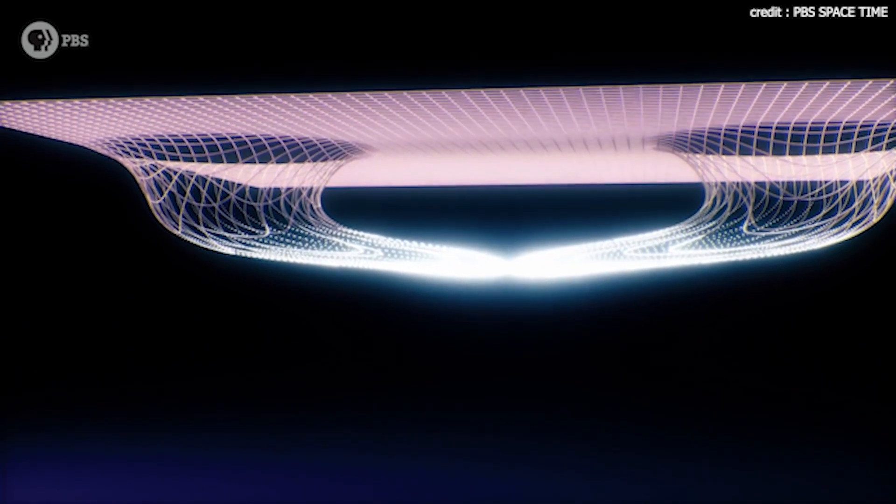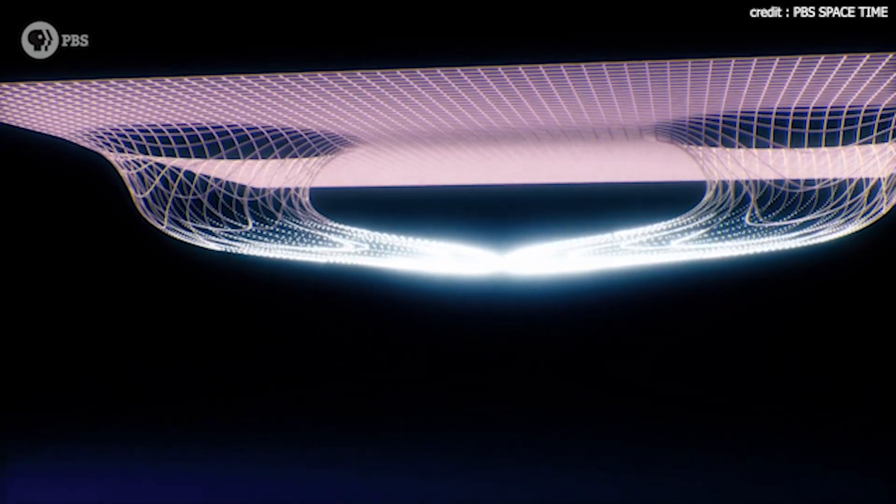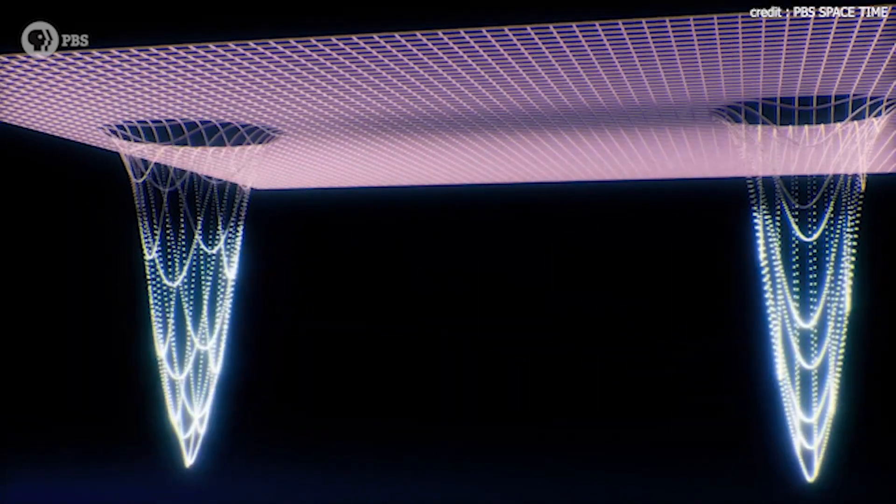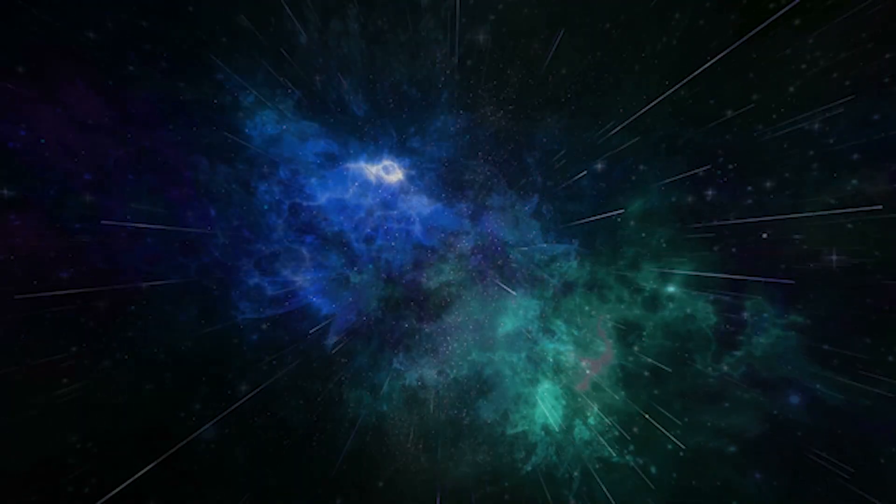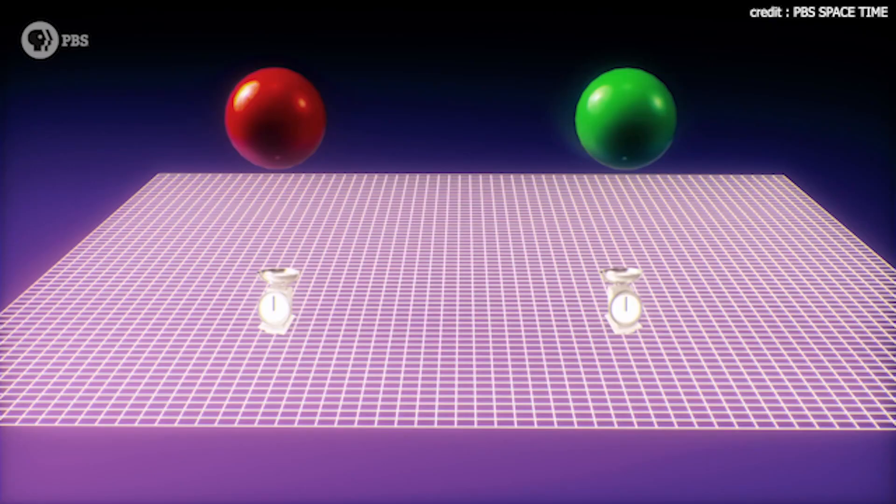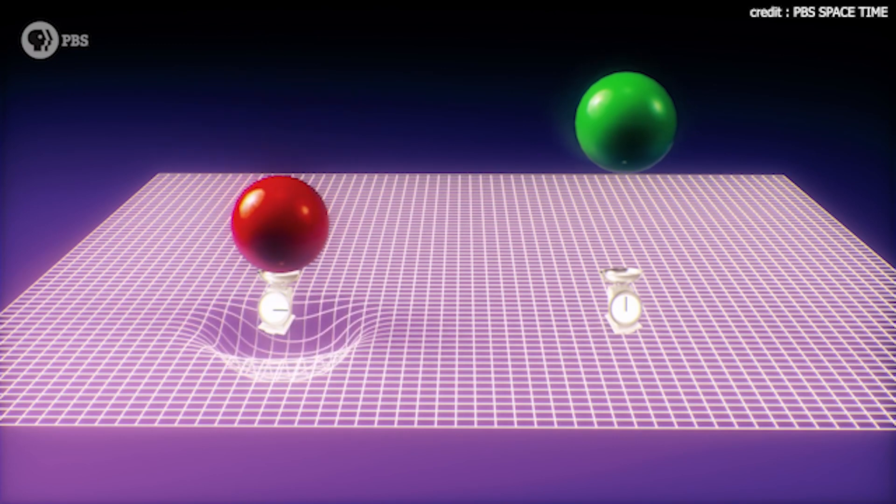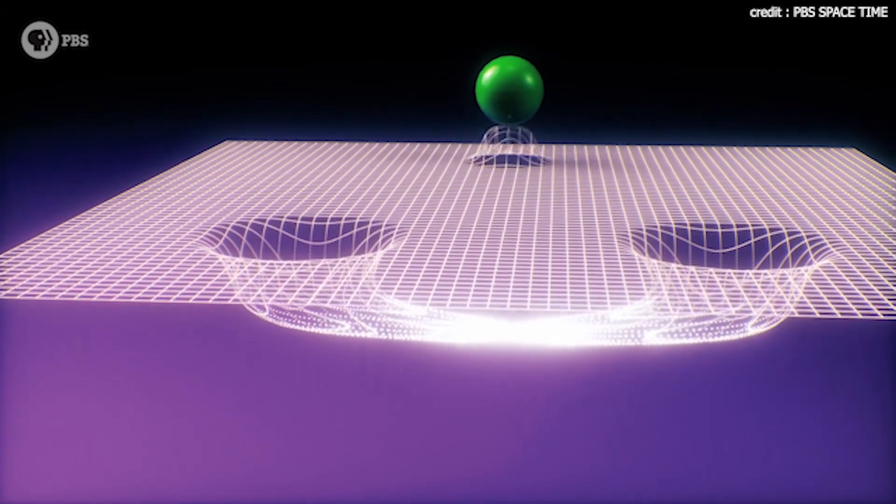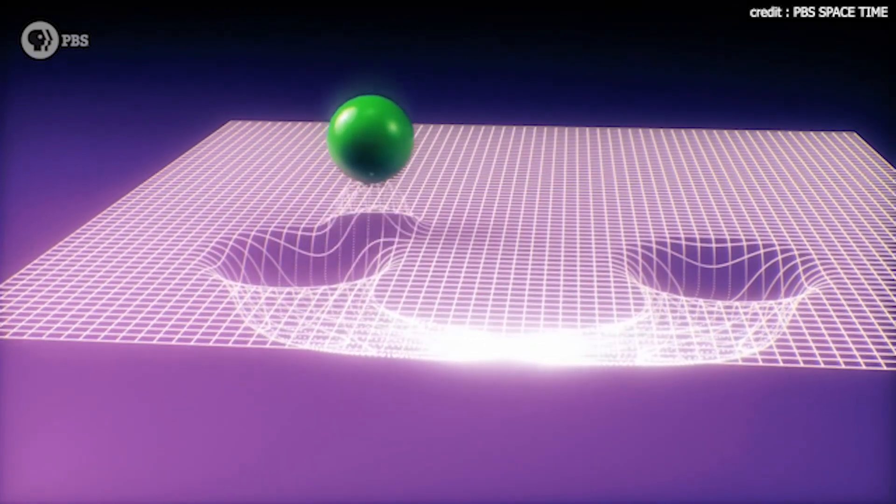The general relativity does allow wormholes, but they are certainly not stable. They collapse almost instantly, creating inescapable black holes. In order to make a wormhole stable, we need something probably non-existing matter called negative mass or exotic matter. More technically, the wormhole space-time requires a distribution of negative energy.